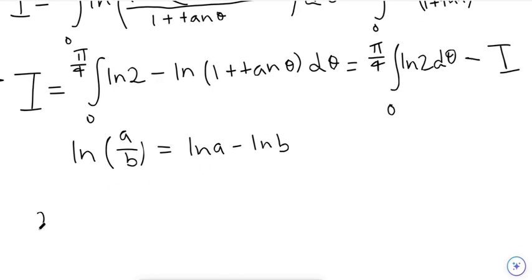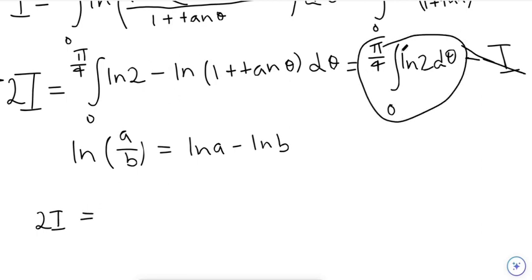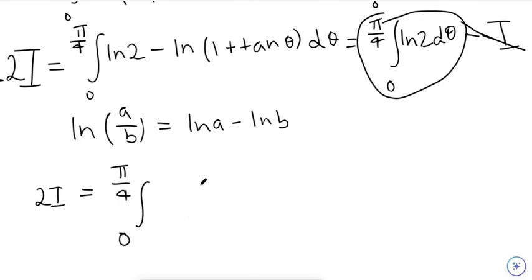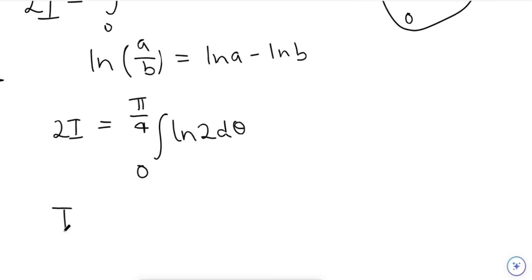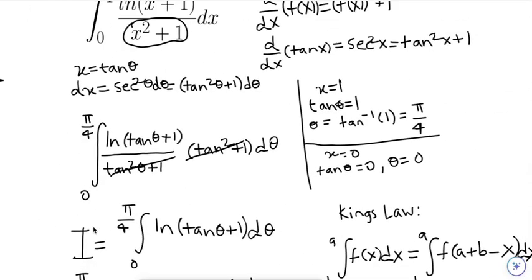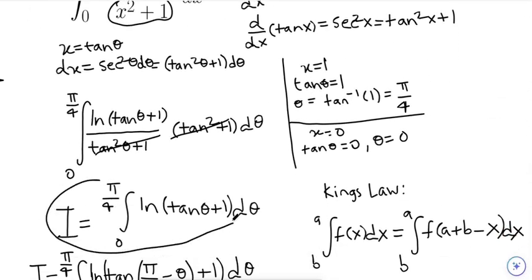Adding I to both sides gives 2I = the integral from 0 to π/4 of ln(2) dθ. This is a pretty simple algebraic expression.